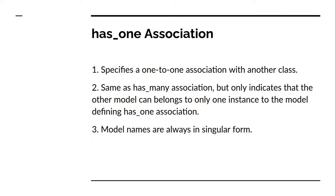This is the perfect case where we can implement one-to-one association using has-one and belongs-to. There are other examples as well — for example, a supplier has one account, and every account belongs to only one supplier, because in an e-commerce or supply chain application no supplier can have multiple accounts. The has-one association is similar to has-many, but it indicates the other model belongs to only one instance. Model names in has-one association are always in singular form.